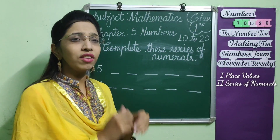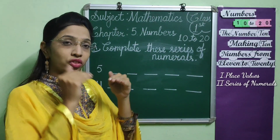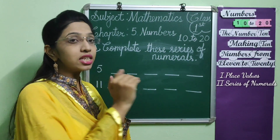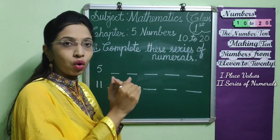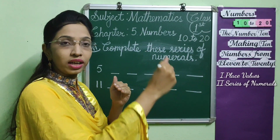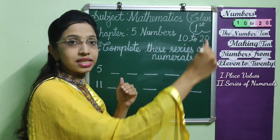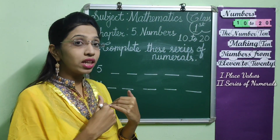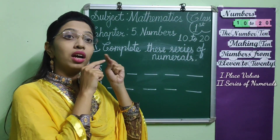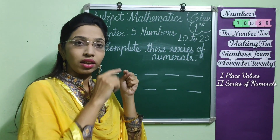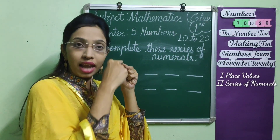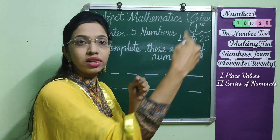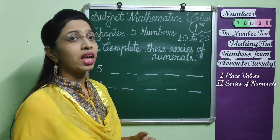Like, if I start from 3, the series will be 3, 4, 5, 6, 7, so on. If I start with the number 9, then the series will be 9, 10, 11, 12, 13, so on.